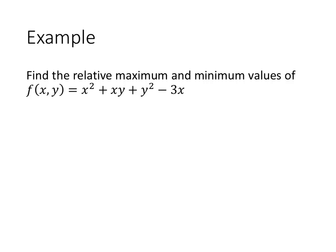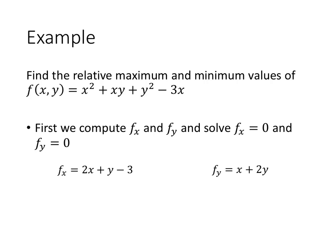Let's try an example. Find the relative maximum and minimum values of f(x, y) equals x squared plus xy plus y squared minus 3x. First, we compute f_x and f_y and solve f_x equals zero and f_y equals zero. The partial derivative with respect to x is 2x plus y minus 3, and the partial derivative with respect to y is x plus 2y. We set both equal to zero.